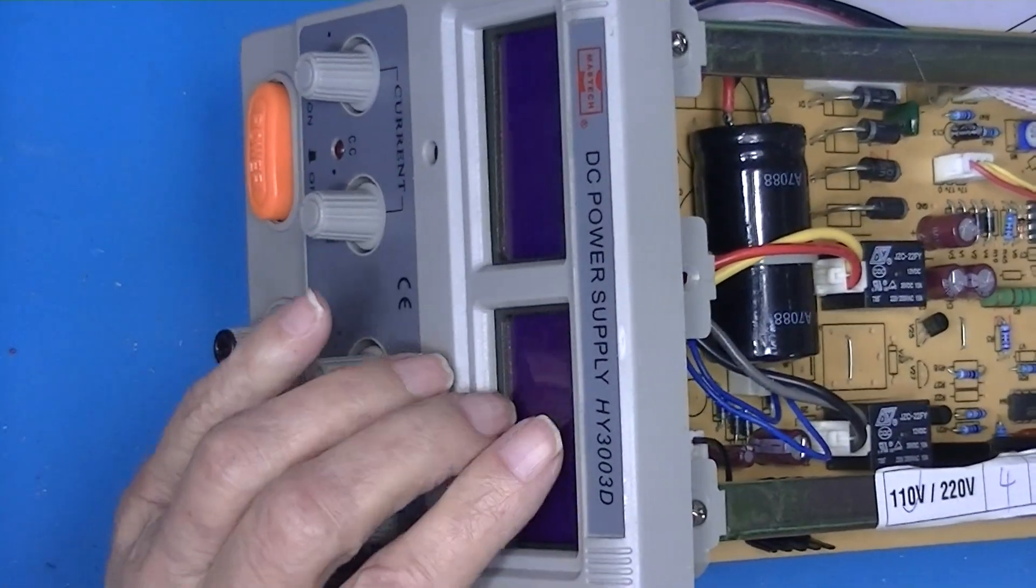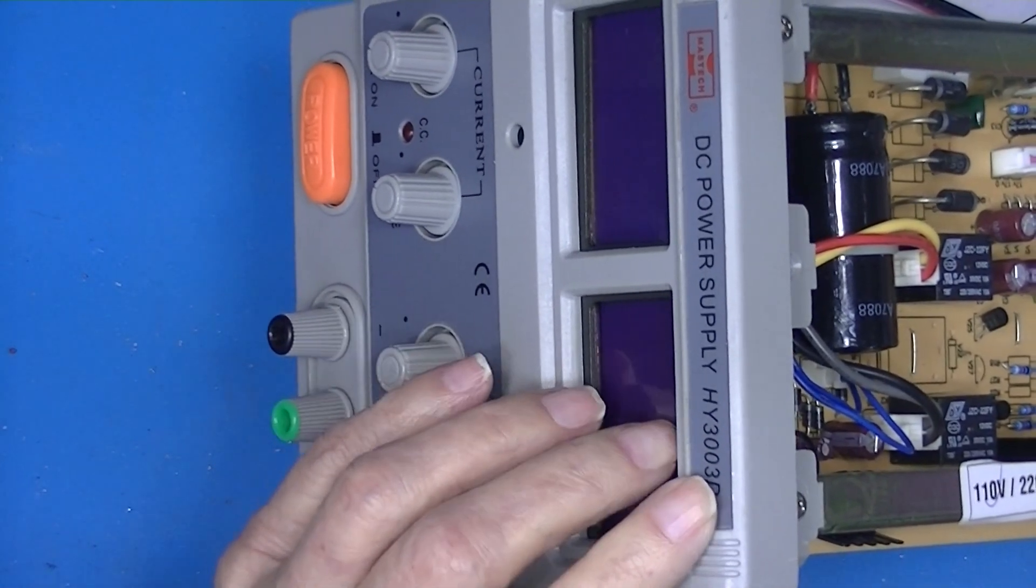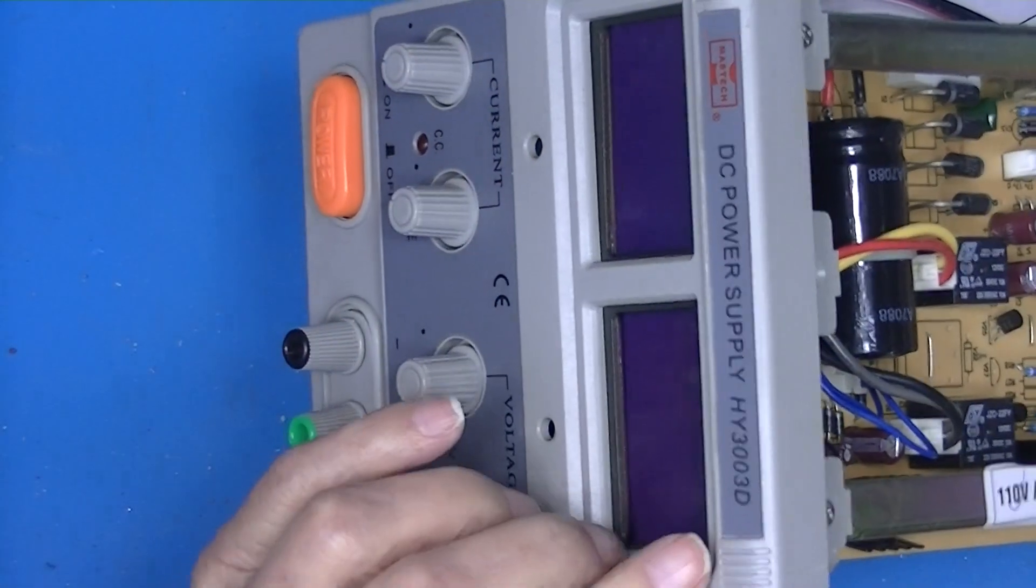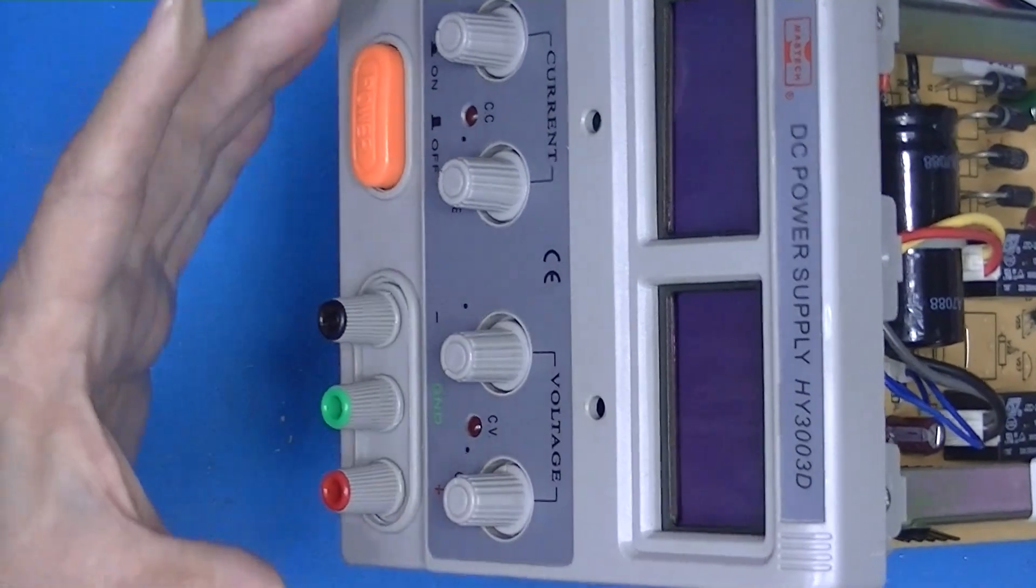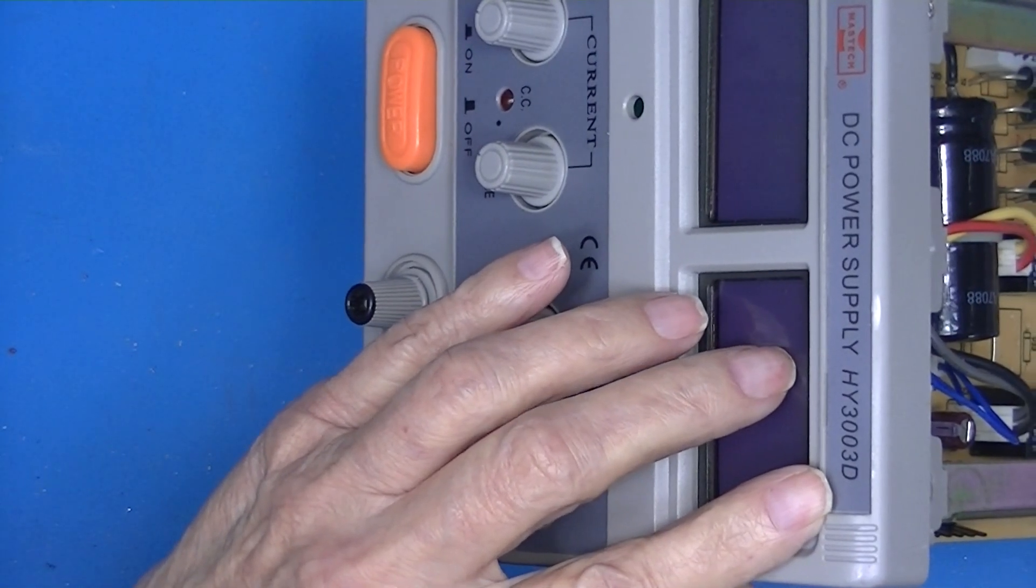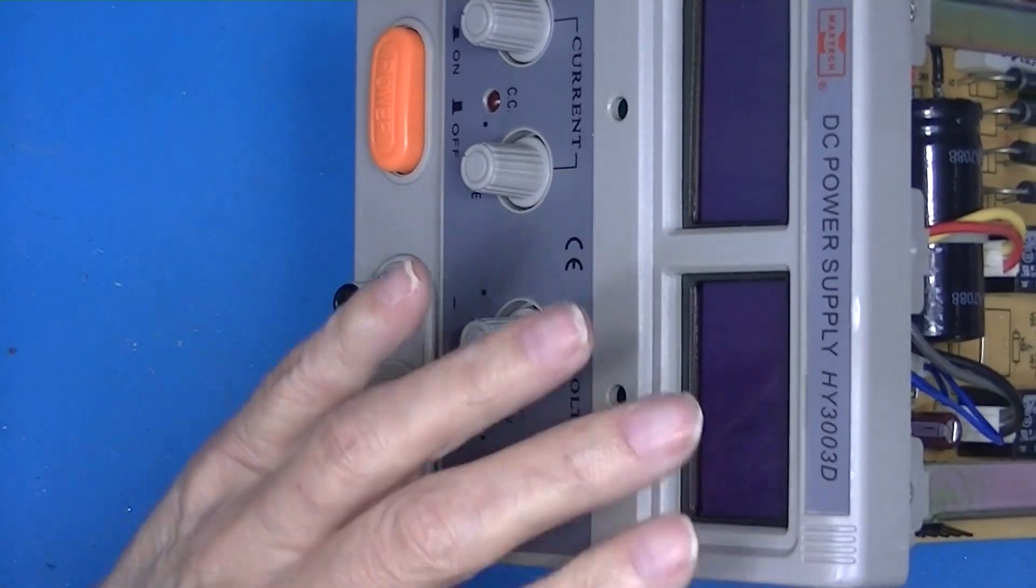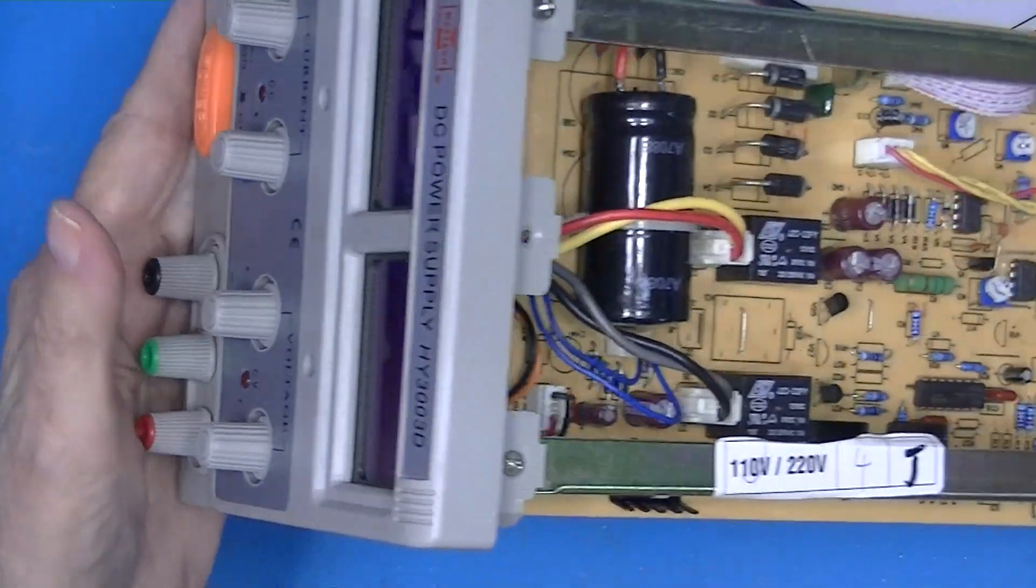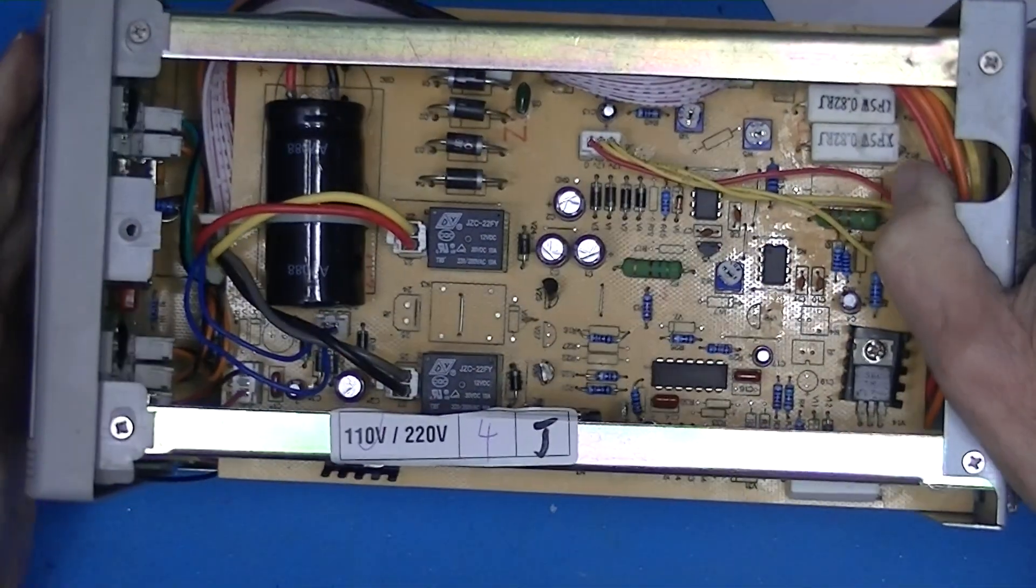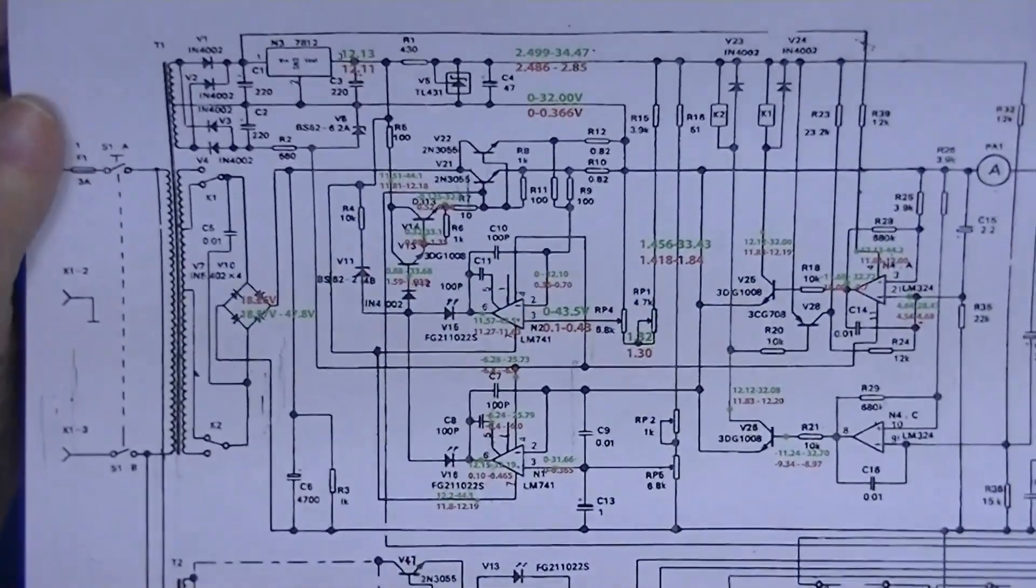It's an HY3003D, 30 volts at 3 amps. The D is the version. They make a duplex supply, I think that's a D2, and they do make an E and an F. I believe one of those later versions uses a toroidal transformer instead of the E core or EI core transformer. I cannot find a schematic for this 3 amp model. I was able to find a schematic for a 5 amp model.